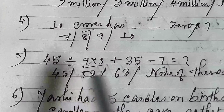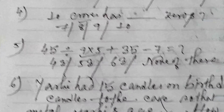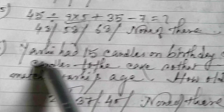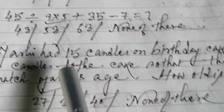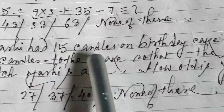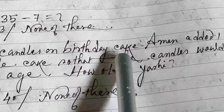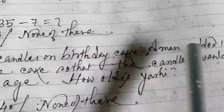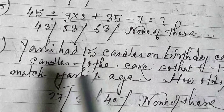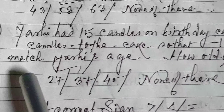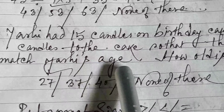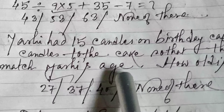Next simplification: 45 ÷ 9 × 5 + 35 − 7. Iska value kia hoga? Options are 43, 53, 63, none of these. The answer is 53.